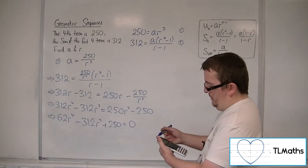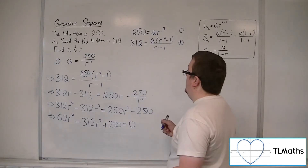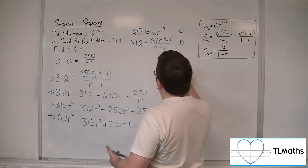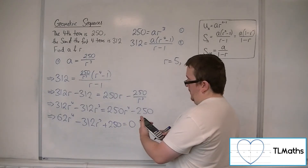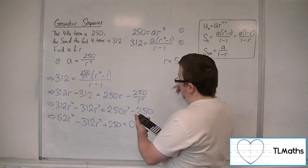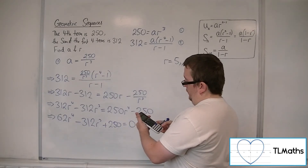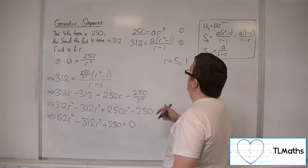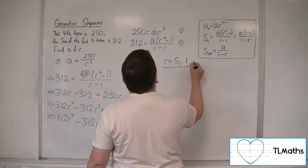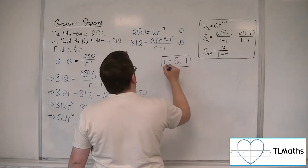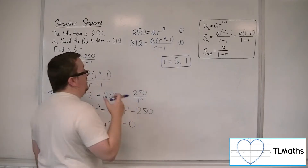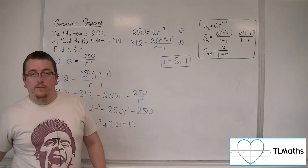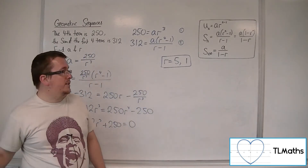The calculator gives R equals 5 or R equals 1, along with two imaginary values. So these are the only two real values of R.